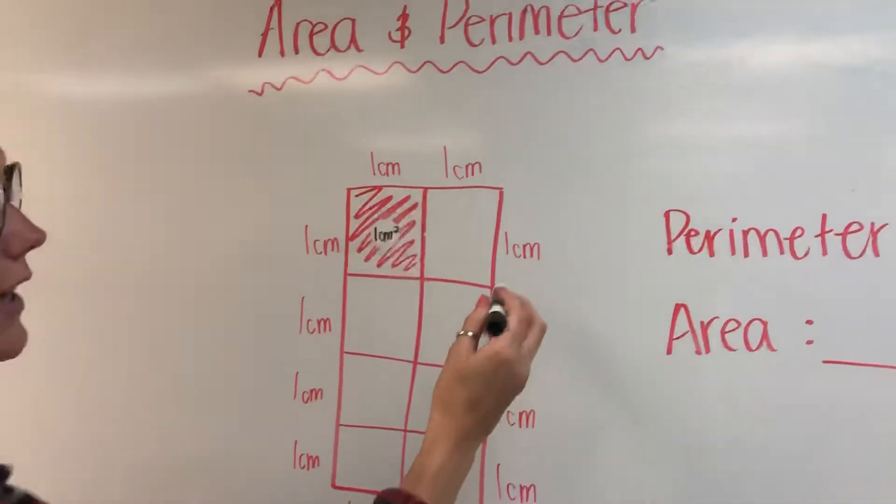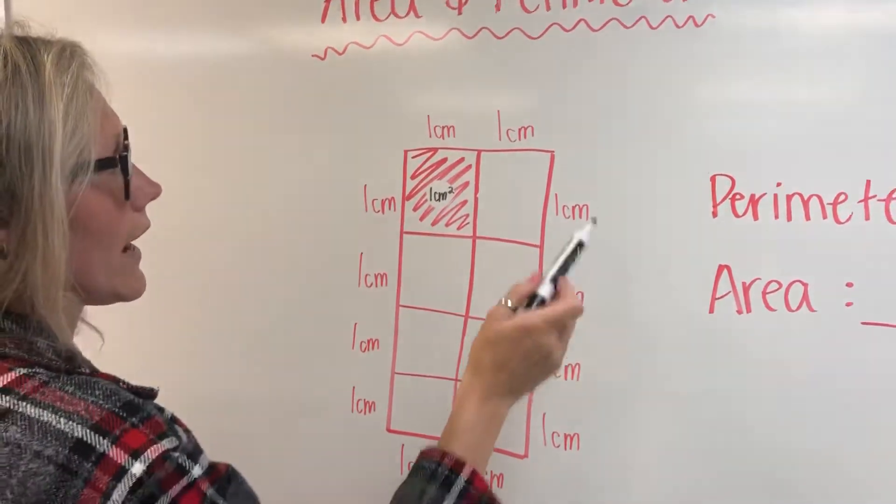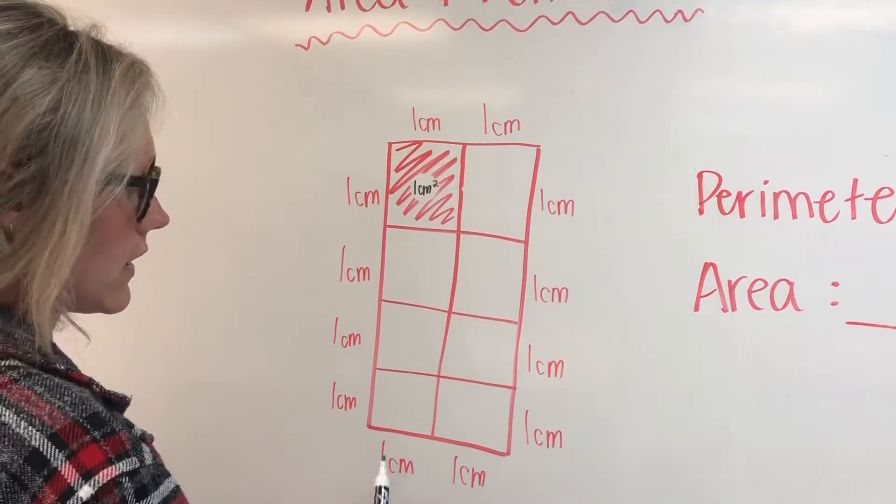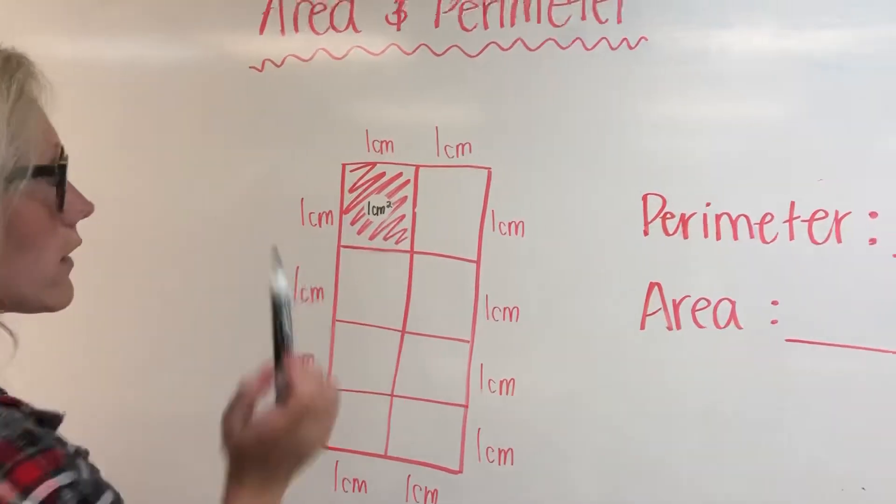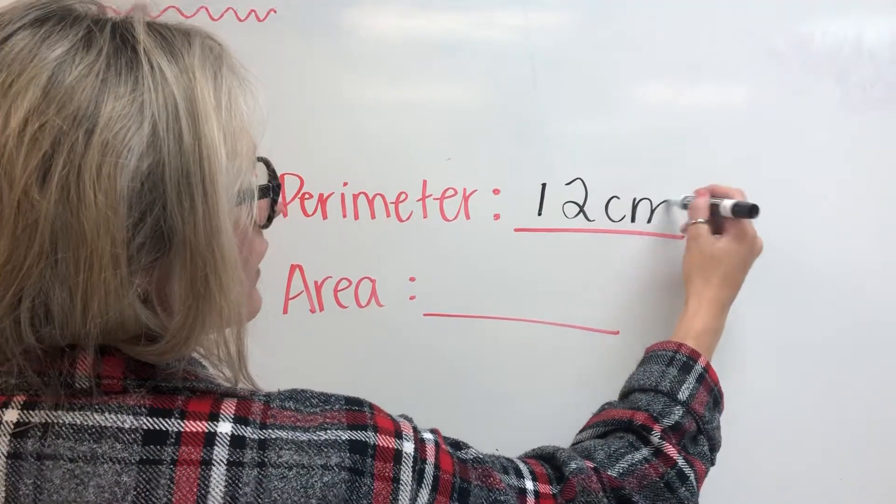The perimeter is always the length around an object. So if I count 1, 2, 3, 4, 5, 6, 7, 8, 9, 10, 11, 12, the perimeter around the object is 12 centimeters.